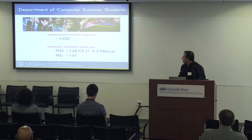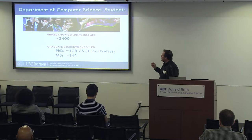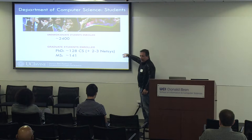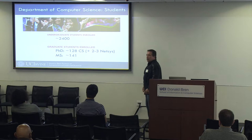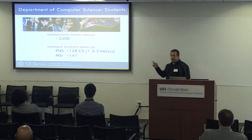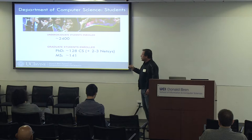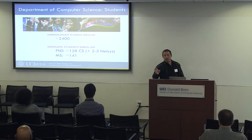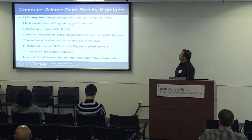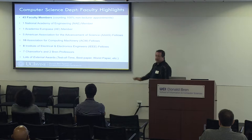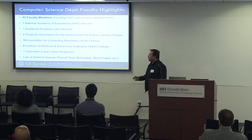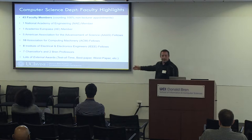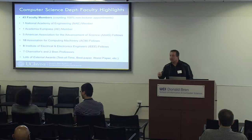We have approximately 2,400 undergrads. We have 128 computer science PhD students, plus 2 to 4 network systems students, and about 140 master's students. As for faculty, we have 43 members conducting research — 42 mainstream and one adjunct. This is the standard brag sheet every department has, listing honors, accolades, and awards, of which we have plenty — including, I should mention, the worst paper award.